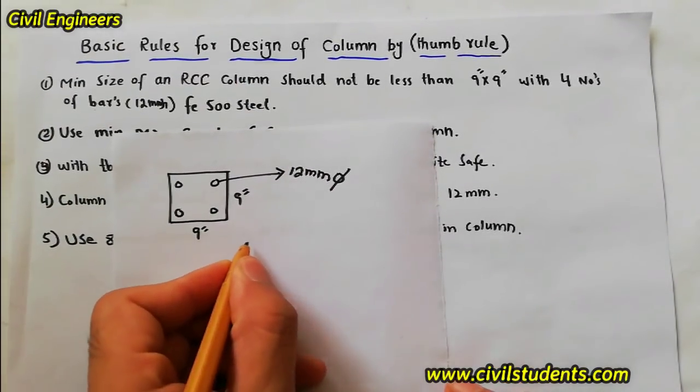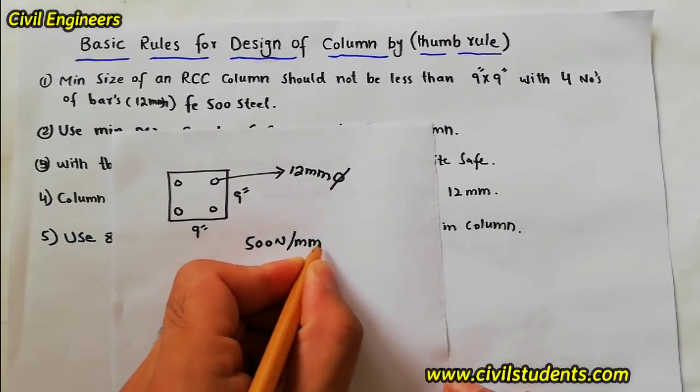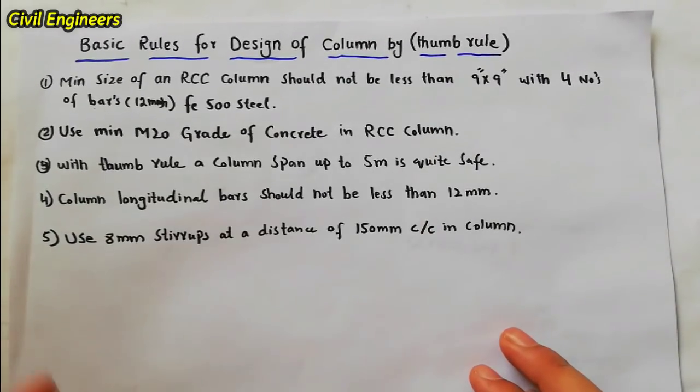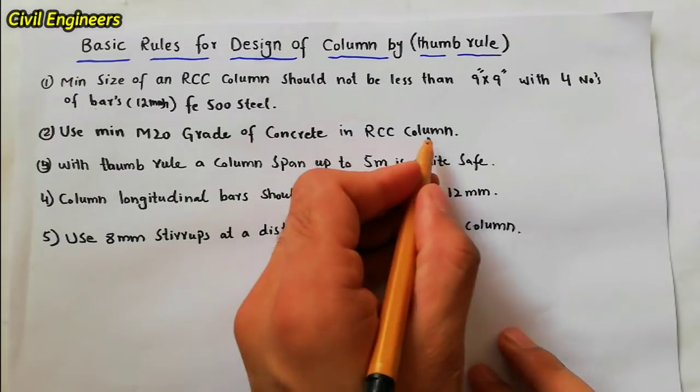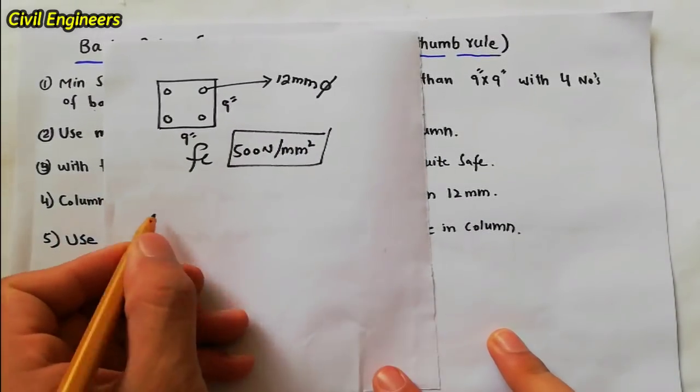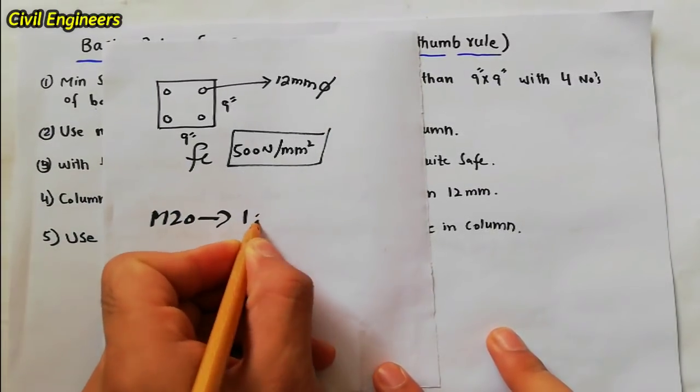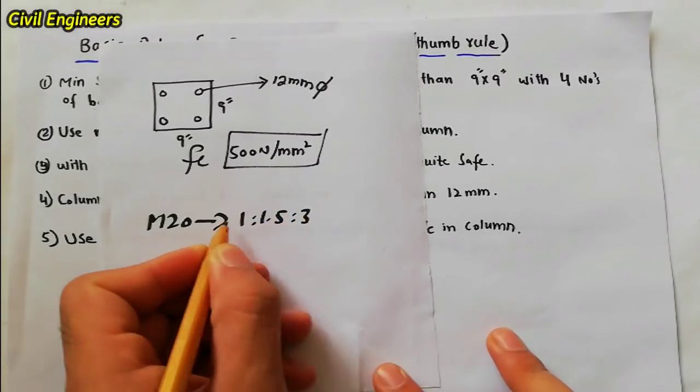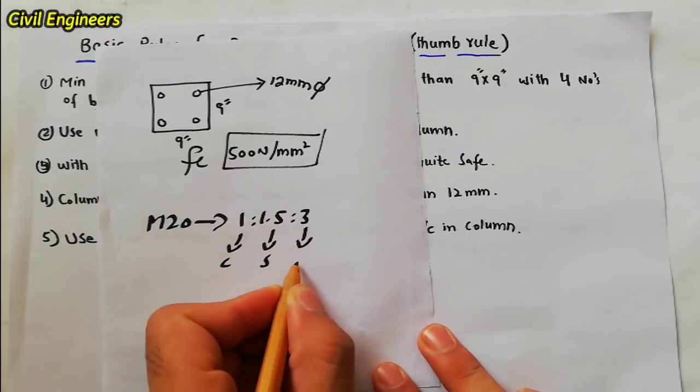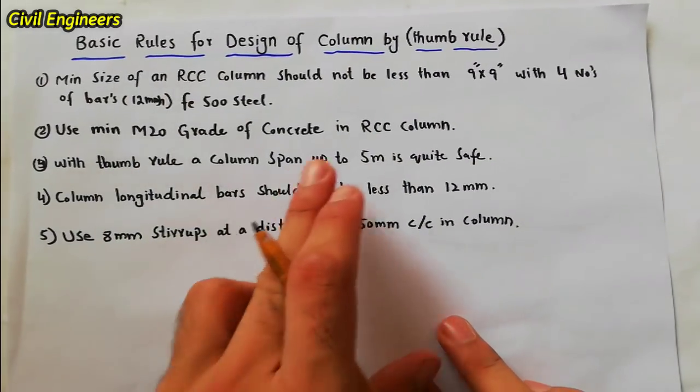The other one is use minimum M20 grade of concrete in RCC column. M20 grade of concrete ratio is 1:1.5:3. One is cement, 1.5 is sand, and three is crush or aggregate. Minimum M20 grade of concrete should be used in RCC column.